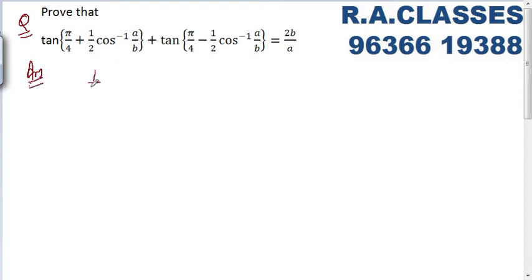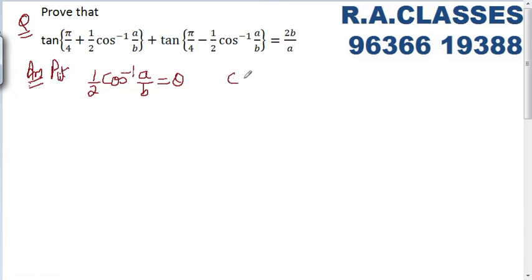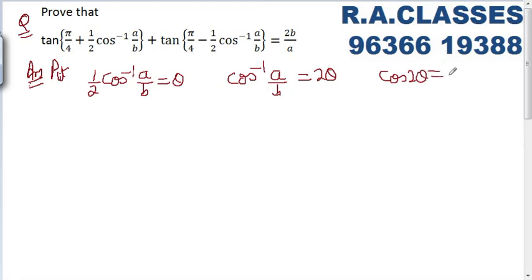For solving this question, we are going to put ½cos⁻¹(a/b) = θ. So if ½cos⁻¹(a/b) = θ, then cos⁻¹(a/b) = 2θ. From this, cos2θ = a/b. Consider it as the first equation.